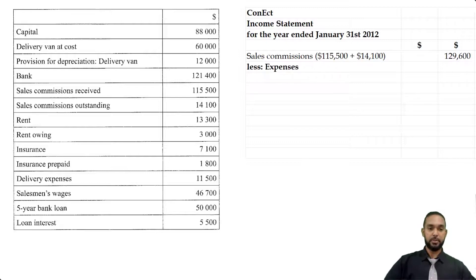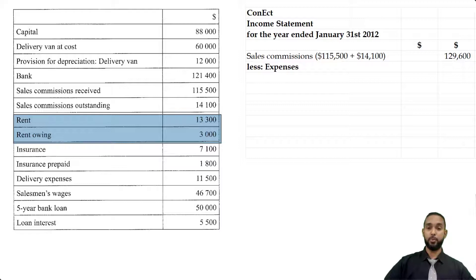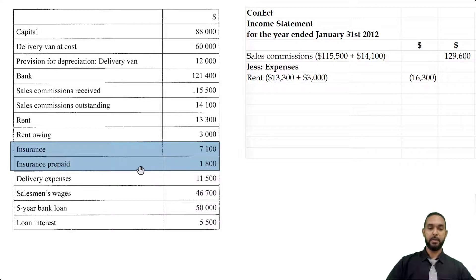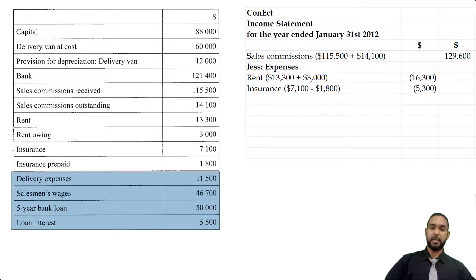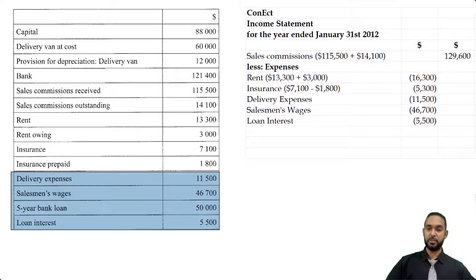The first expense is rent and rent owing — we have an accrued portion. Just like with the revenue, we add them together: rent 13,003 plus 3,000 giving us 16,003. Next, insurance and insurance prepaid. Prepaid figures are paid in advance and therefore need to be subtracted to find the income statement figure: 7,100 minus 1,800 gives us 5,300 — that's the actual insurance expense. Delivery expenses, salesman's wages, and loan interest are expenses — not the five-year bank loan — so we simply insert those figures as they are.